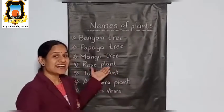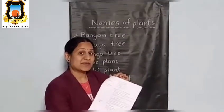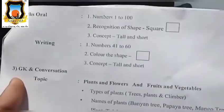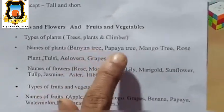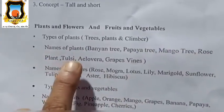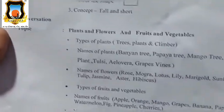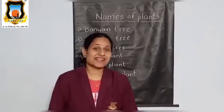Today I have told you so many names. Understood? Look at your syllabus book — syllabus paper. It is given here: names of plants — banyan tree, papaya tree, mango tree, rose plant, tulsi plant, aloe vera plant, and grape vines. Every day you have to practice these names of plants.